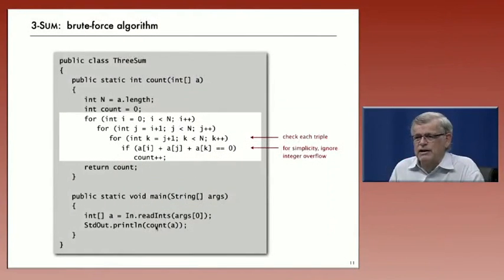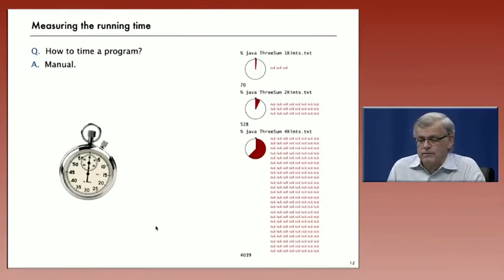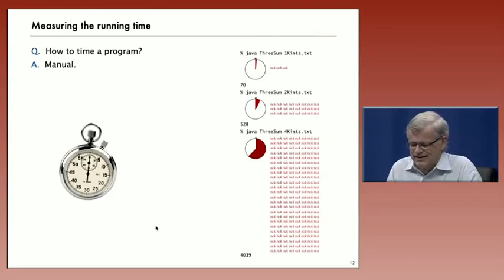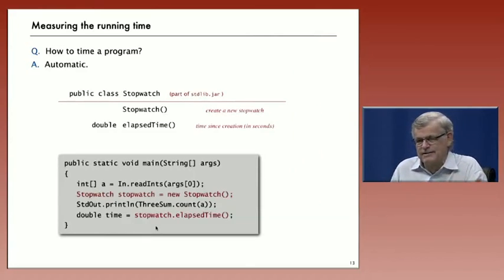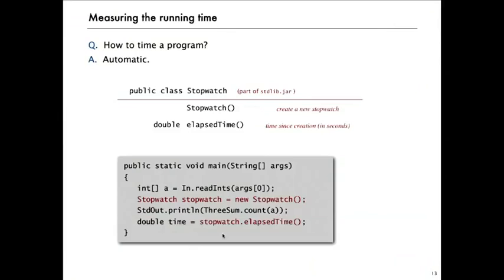Now what we're interested in is how much time does this take as a function of N? Well, one way to time a program is to just look at the watch. If you have a stopwatch or look at the clock or your phone, whatever you might need, you can just go ahead and time it if you want. Or we have, Java has, as part of its standard library, a stopwatch class that will go ahead and compute elapsed time.